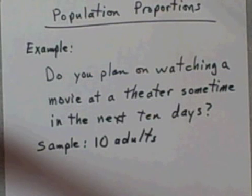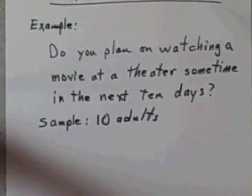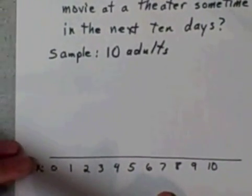Can I expect that the proportion of these 10 adults that plan to go see a movie in the next 10 days is going to be anywhere close to the actual portion of adults in the area that are going to go see a movie? Well, let's answer that question by taking a look at what the distribution of samples of size 10 would look like.